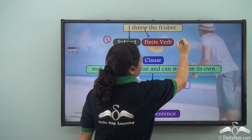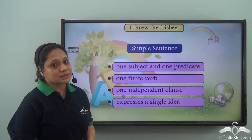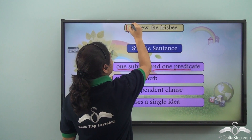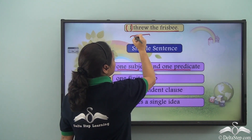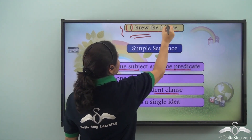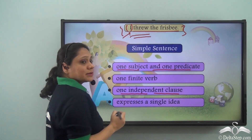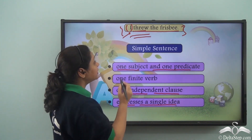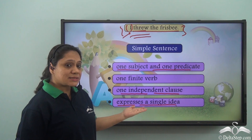'I threw the frisbee' is a simple sentence. What are the characteristics of a simple sentence? It has one subject and one predicate — one subject 'I' and one predicate 'threw the frisbee.' It has one finite verb: 'threw.' It is made up of one independent clause, which has a subject, a verb, makes complete sense, can stand on its own, and it expresses a single idea.